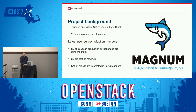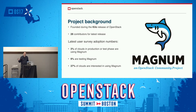The project has been around since the Kilo release of OpenStack. In the latest release, there were 28 active contributors. According to the OpenStack user survey, only 3% of clouds are currently running Magnum, but 37% of them are planning it. There's an adoption rate that is ramping up, and we know almost 10% of them are currently testing Magnum.